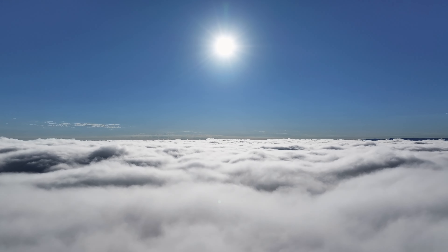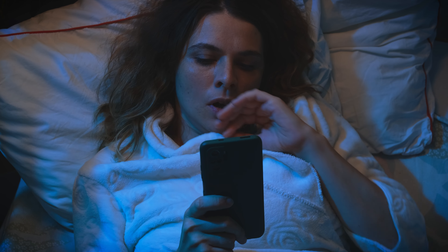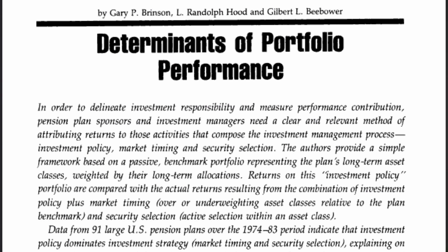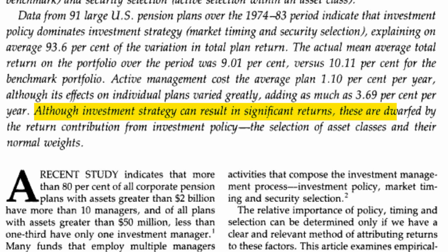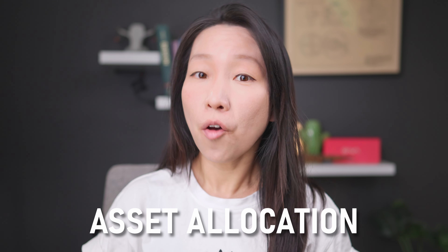Investors all want to find that magic formula that delivers sky-high returns without the sleepless nights worrying about risk. Based on a paper by Gary Brinson published in 1986, 90% of our portfolio returns are determined by how we allocate our assets. So what's the big deal about asset allocation? Why does it have such a colossal impact on our returns?